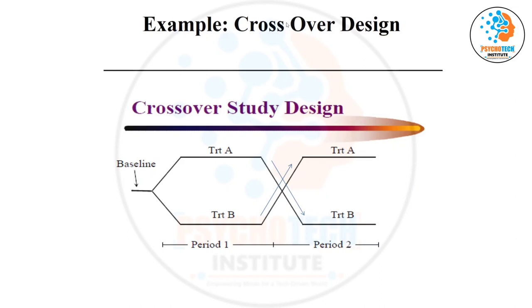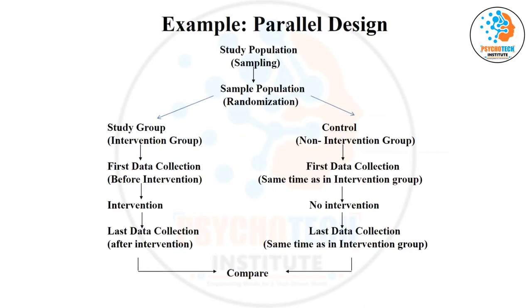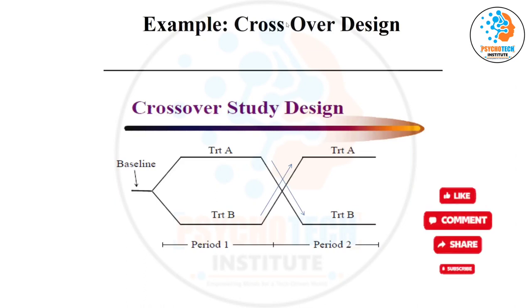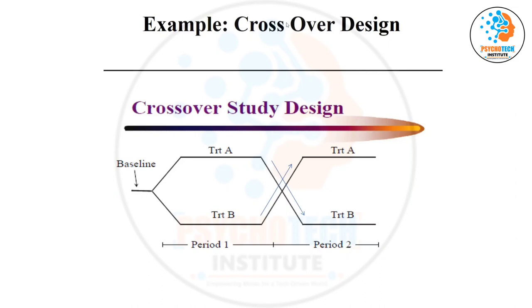To summarize: if participants of both groups receive both treatments, it is a crossover design; if one group receives only one intervention, it is a parallel design. All these processes are involved to improve quality, which is why the randomized control trial is at the top of the evidence hierarchy. Unfortunately, we often don't follow all these steps properly — we just try to finish the study and get a publication. How much effort you put into designing your study is what determines the quality of your results.